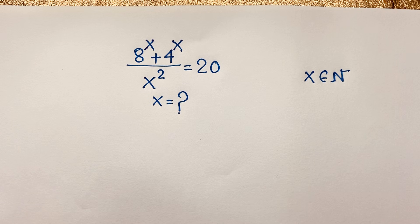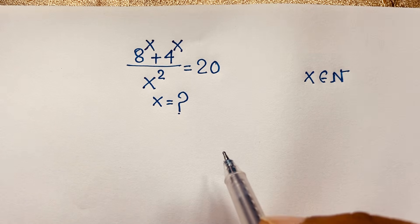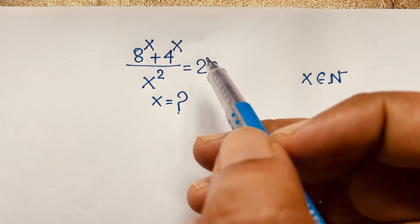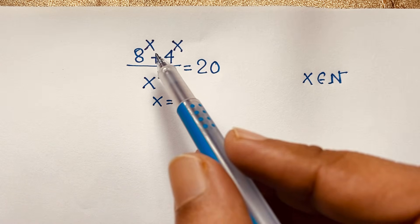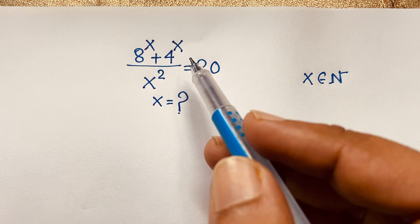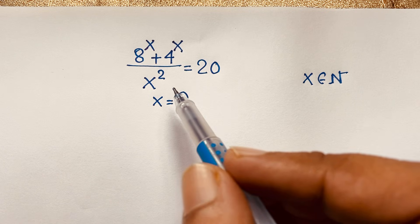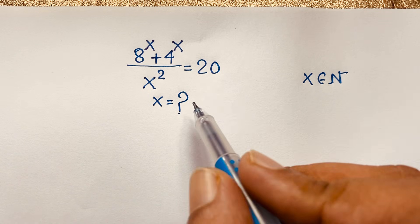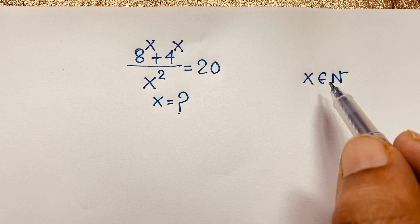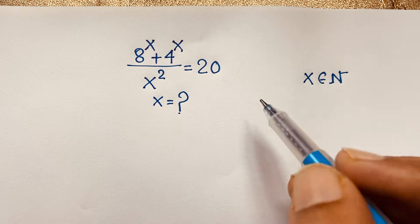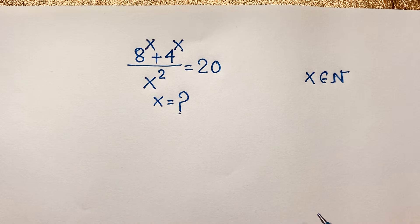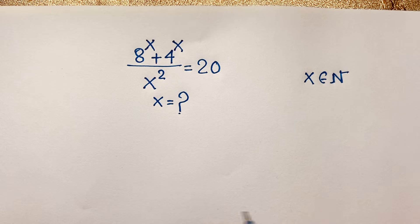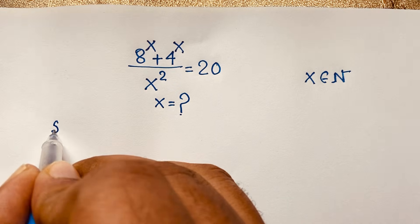Hello everyone, welcome to Russia's classroom. Today we have solved an interesting German math olympiad question, which is: (8 to the power x plus 4 to the power x) over x squared equals 20. What is x, where x is a member of the natural numbers? I will solve this question using an easy method.